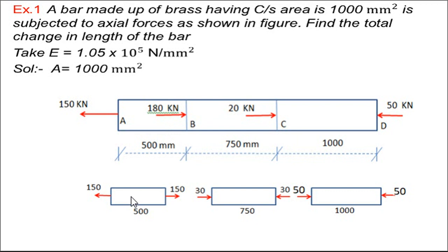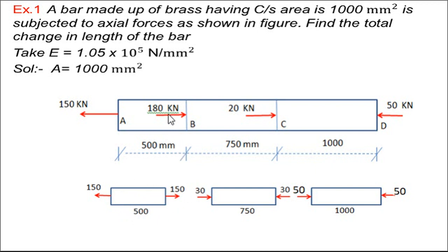We divide this bar into three segments. The first segment has a tensile force of 150 kN. Since the total bar is in equilibrium, all tensile and compressive forces sum to zero. There is a 180 kN compressive force acting, so for the middle segment, 180 minus 150 gives 30 kN acting in compression. For the end segment, there is also a compressive force acting on the third segment.